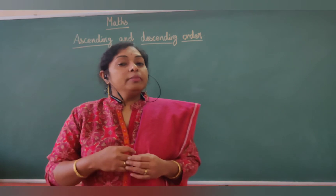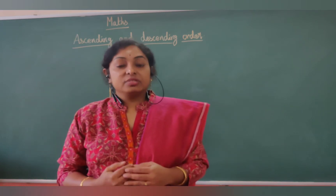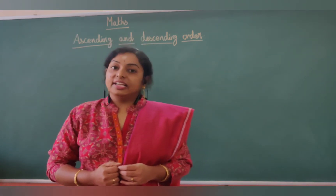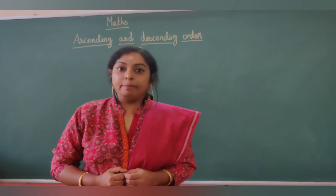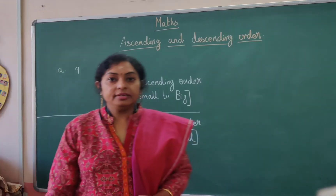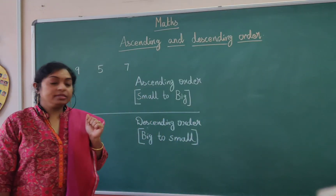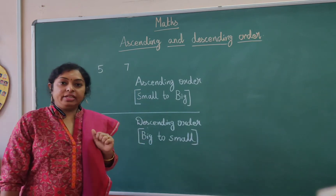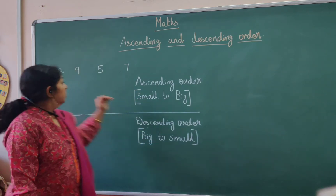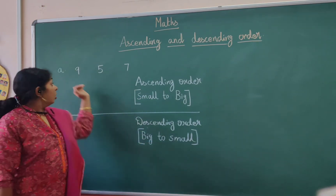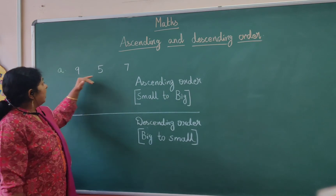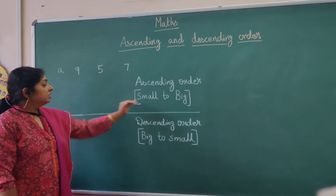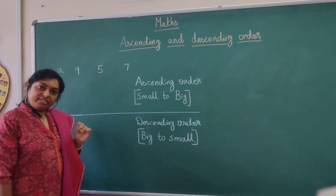Let's work out many exercises for better understanding of ascending and descending order. Let's arrange these numbers in ascending order as well as in descending order. The numbers are 9, 5, and 7. Arrangement of numbers from small to big is very easy.